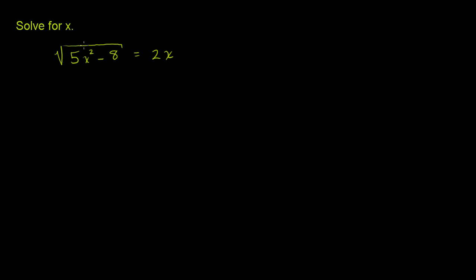We're asked to solve for x, so we have the square root of the entire quantity 5x² - 8 is equal to 2x. Now we already have an expression under a radical isolated, so the easiest first step here is really just to square both sides of this equation.